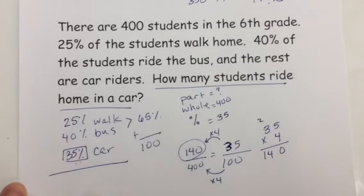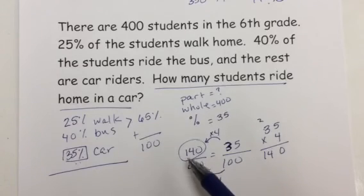Now you could look at that. I mean that basically what we did there was say, well 35 out of every 100. But we have 400. So we multiply that by 4. It's 140 students ride home in a car.